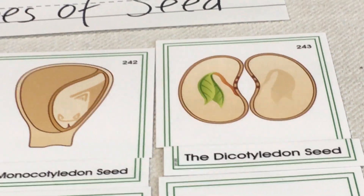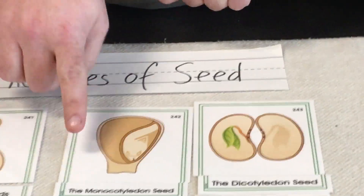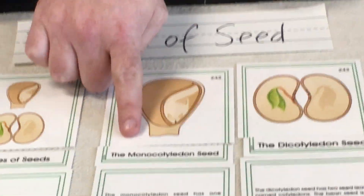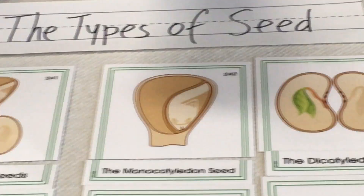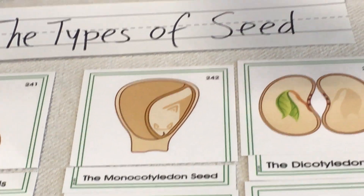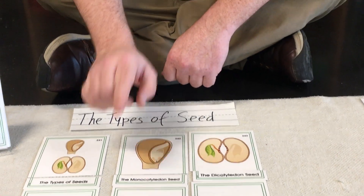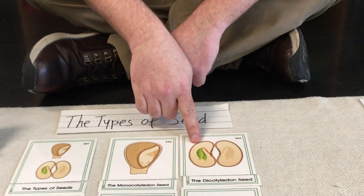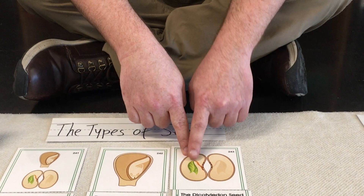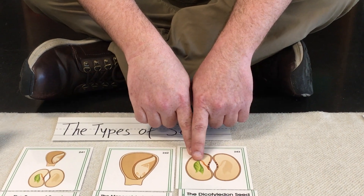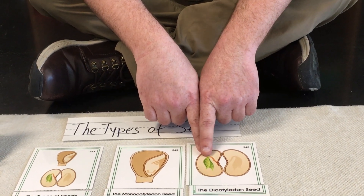So those are the two types of seeds — read after me. Monocotyledon has only one cotyledon, one seed embryo. Dicotyledon has two cotyledons, or two leaves in the seed embryo.